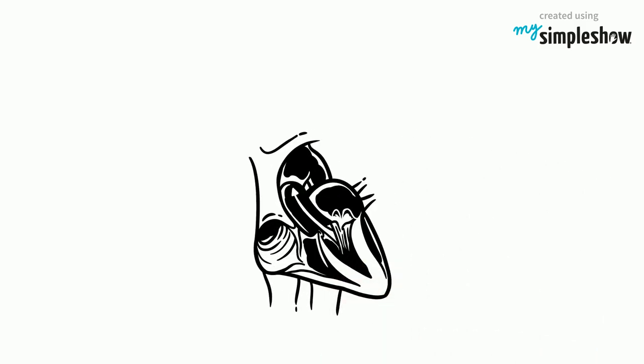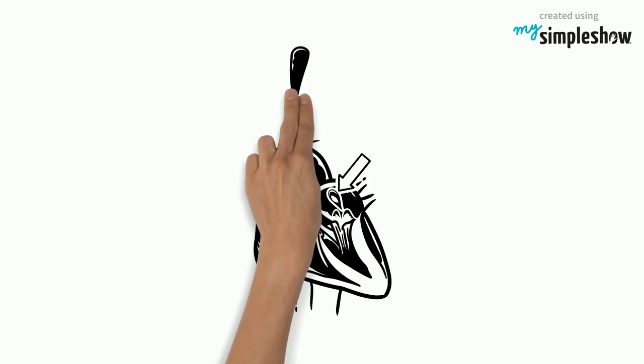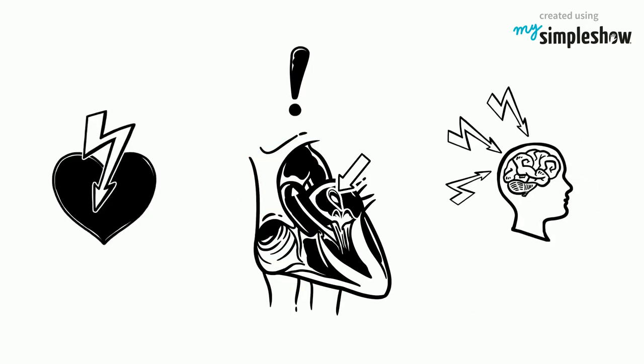Also, in certain cases, the prolapsed valve regurgitates, or lets blood leak backward, which, in large amounts, can form blood clots that potentially lead to stroke or heart attack.